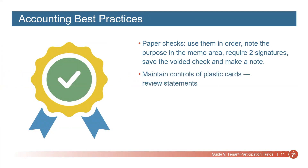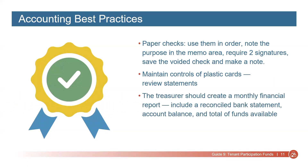Maintain controls of credit or debit cards. Some PHAs issue cards to Resident Councils. Anyone holding the card should know its proper uses and statements should be checked to make sure charges are approved. The Treasurer should create a monthly financial report and include a reconciled bank statement, account balances, and total of funds available.